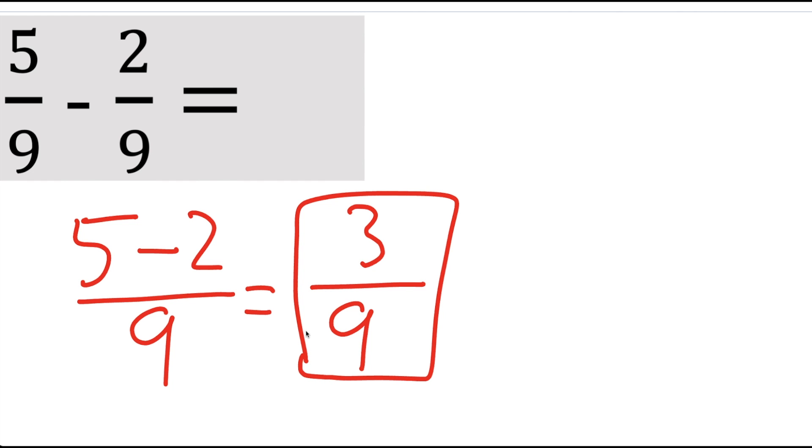A lot of you probably learned about simplifying, and what that means is to make it into more simple terms. So both of these pieces we can divide by 3. 3 divided by 3 is 1, and 9 divided by 3 is 3. So this right here is the answer that is simplified.